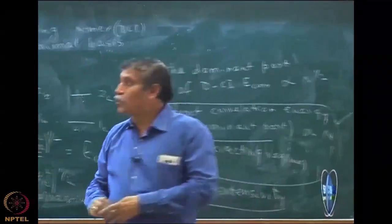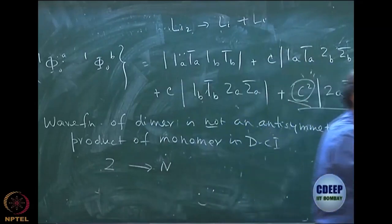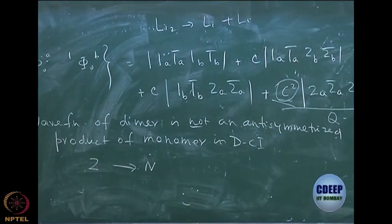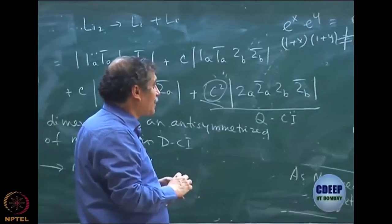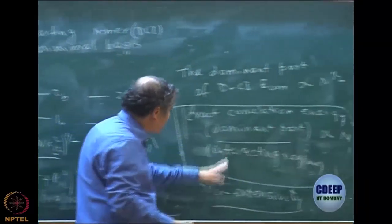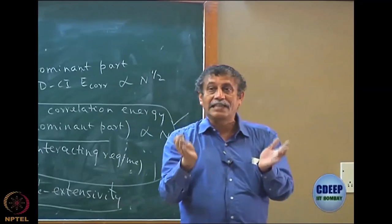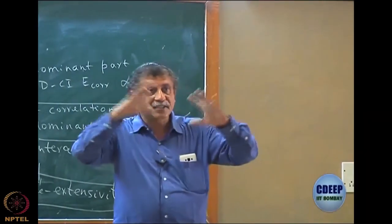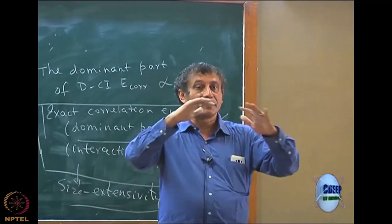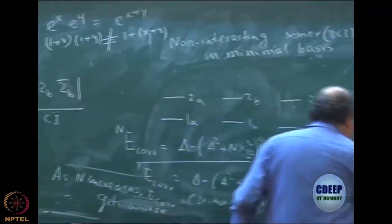If it is non-interacting, it automatically becomes exactly equal to n times. But there are two different things. While a size-extensive theory may lead to size consistency, what is interesting to note is that size consistency has still another level of rigor. Size extensivity essentially says that the exact correlation energy for a given system in the same external potential is always proportional to n.